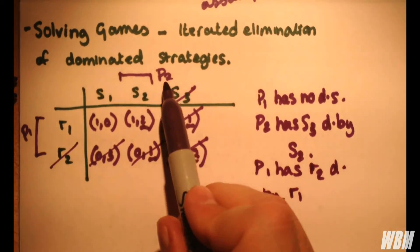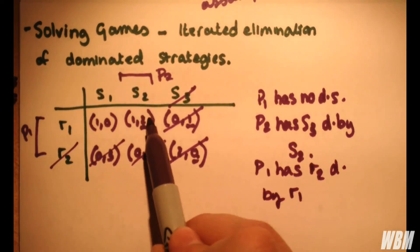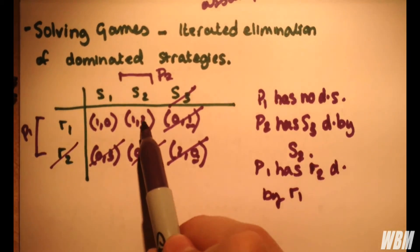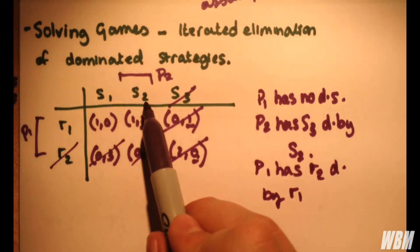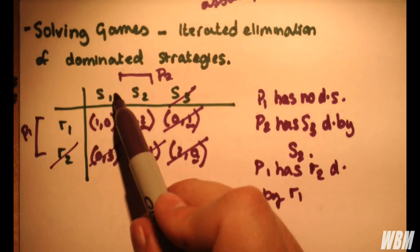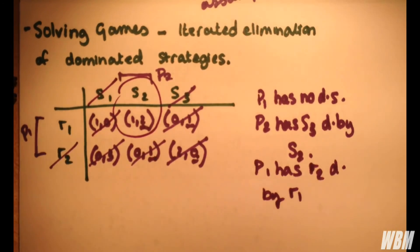So player 1 has strategy R2 dominated by R1. So back to player 2, we have 2 is a greater value than 0. So for what's left, we have strategy S2 dominate strategy S1. And we're left with R1, S2.